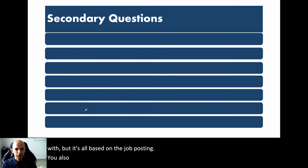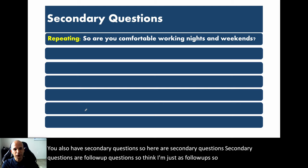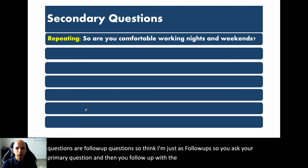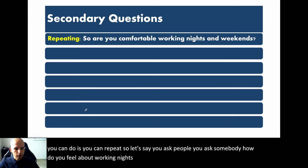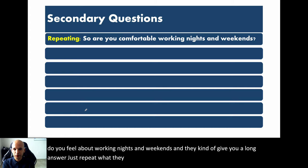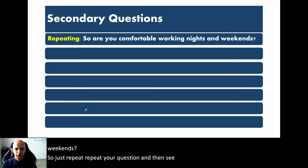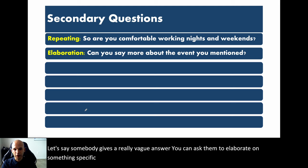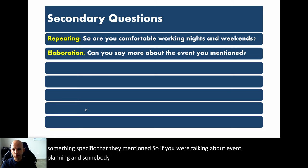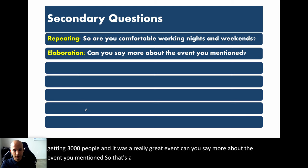You also have secondary questions — follow-up questions. You ask your primary question, and then follow up with the secondary. One thing you can do is repeat: if you ask someone 'How do you feel about working nights and weekends?' and they give a long answer, just repeat — 'So, are you comfortable working nights and weekends?' — and see if they answer it more directly the second time. You can also elaborate: if somebody gives a vague answer, ask them to expand on something specific they mentioned. If they say 'I planned an event that ended up getting 3,000 people,' you can say: 'Can you say more about that event?'